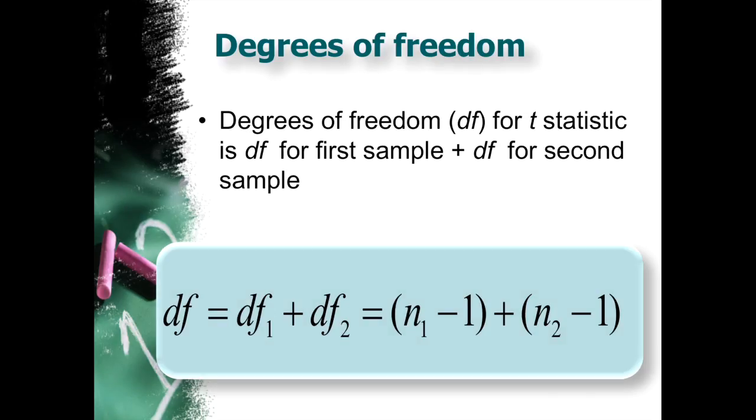Degrees of freedom. So up until this point, degrees of freedom have been n minus 1, and that's not really changing a lot, but again, we're dealing with two separate groups now. So it has to be n minus 1 plus n minus 1. That way you take into consideration that we have two separate samples that we're working with.